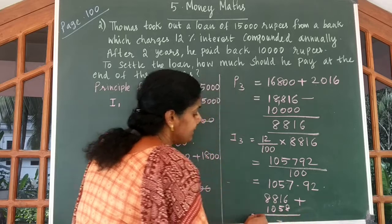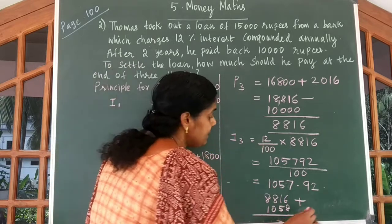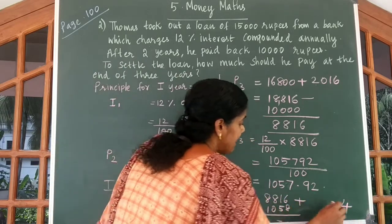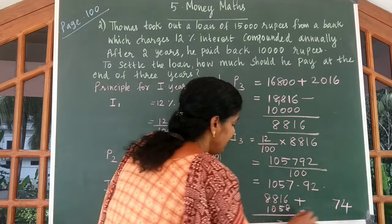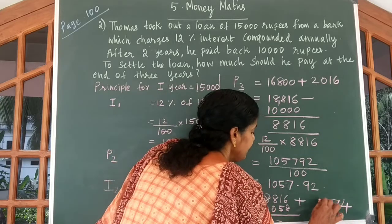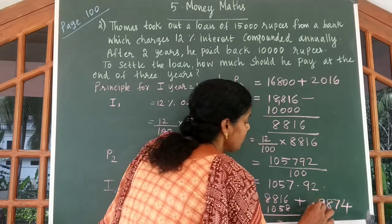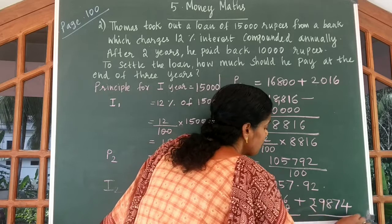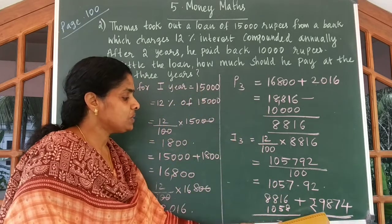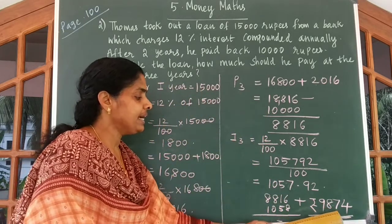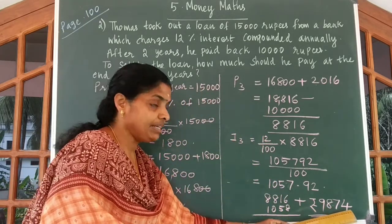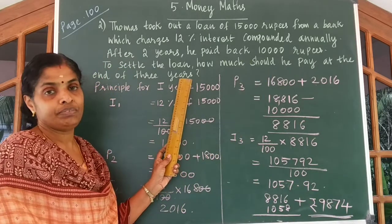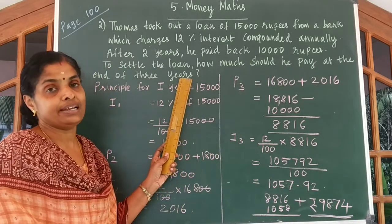At the end of three years, he would be paying the principal value of ₹8,816 added to the interest of ₹1,057.92. Adding the two numbers gives ₹9,874. So he has to pay ₹9,874 to settle the loan after three years.